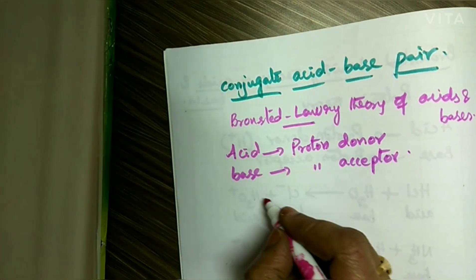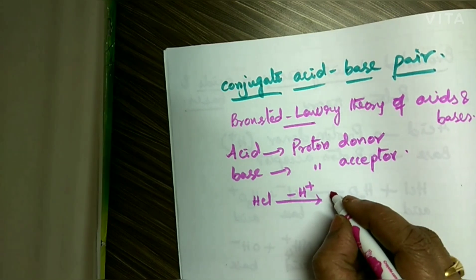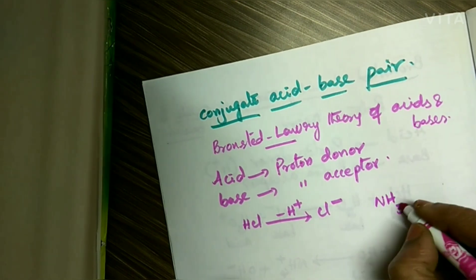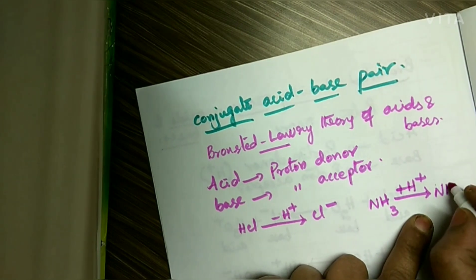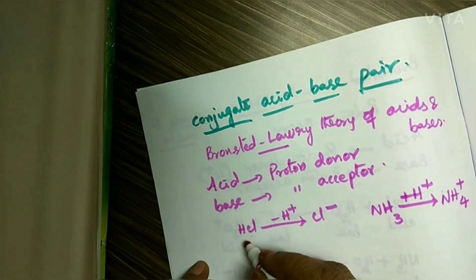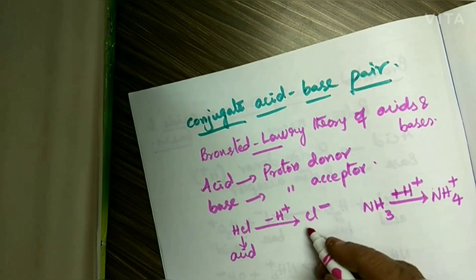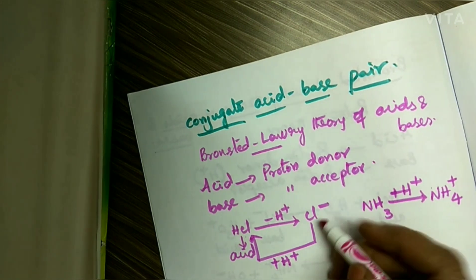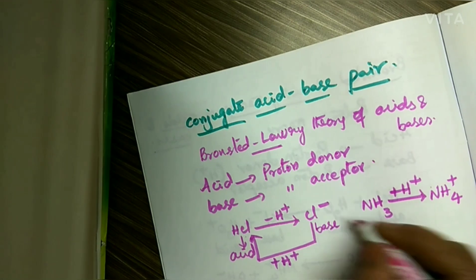For example, HCl by losing a proton it forms Cl⁻, and ammonia NH3 by accepting a proton it forms NH4⁺ ion. HCl is losing a proton so it is an acid. Cl⁻ by accepting a proton it forms HCl, so it is a base.